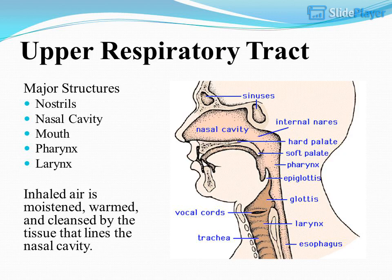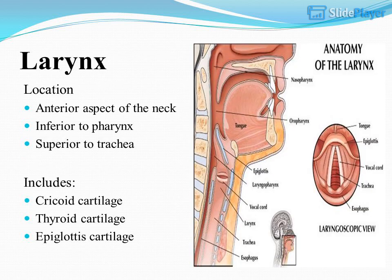Upper respiratory tract. Major structures include nostrils, nasal cavity, mouth, pharynx, and larynx. Inhaled air is moistened, warmed, and cleansed by the tissue that lines the nasal cavity. Larynx location includes the anterior aspect of the neck.